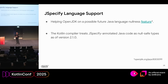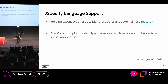There is also language support. Oracle, through OpenJDK, was a participant in the working group. They are aware of the model we've built and are working on a future Java language nullness feature. The model they have was informed by our model — it actually got a lot simpler after our conversations with them. If you adopt JSpecify's annotations, you're on a good path to eventually supporting Java's language feature down the road. Also, the Kotlin compiler treats JSpecify-annotated Java code as null-safe and reports errors and does correct type inference as of version 2.1.